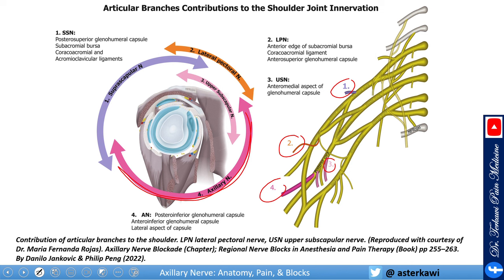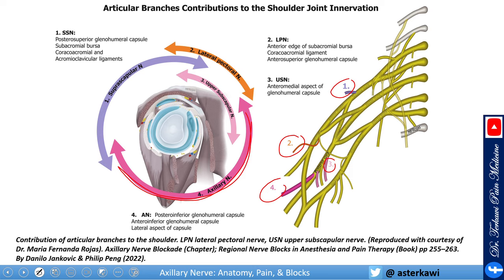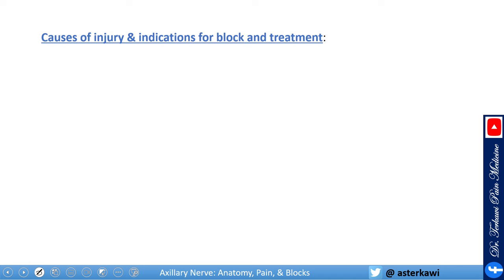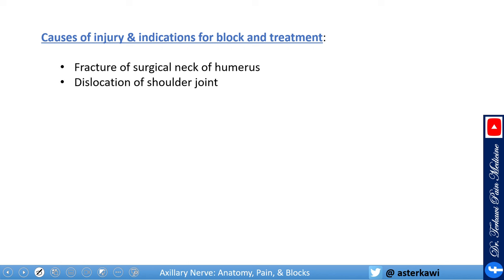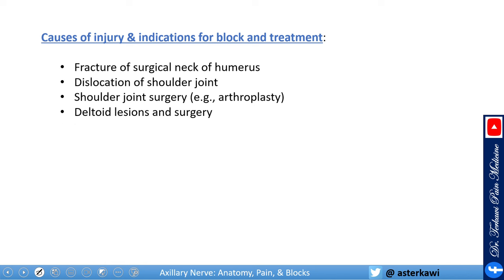It is a very important nerve when discussing shoulder innervation. Axillary nerve pain or neuralgia — potential causes of injury and indications for block and treatment include: fracture of the surgical neck of the humerus, dislocation of the shoulder joint, shoulder joint surgery (mainly arthroplasty), and deltoid lesion and surgery. One example is a patient with a large lipoma over the deltoid who had a big incision there, resulting in axillary nerve neuralgia.